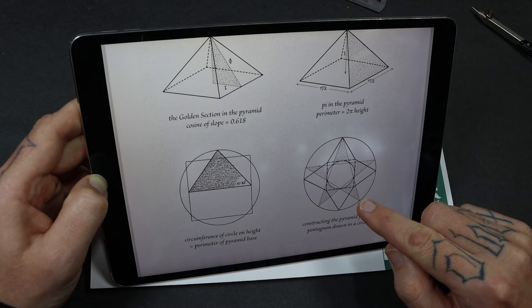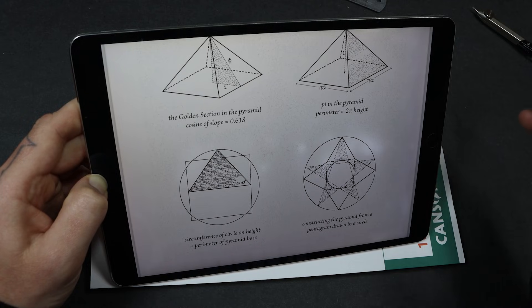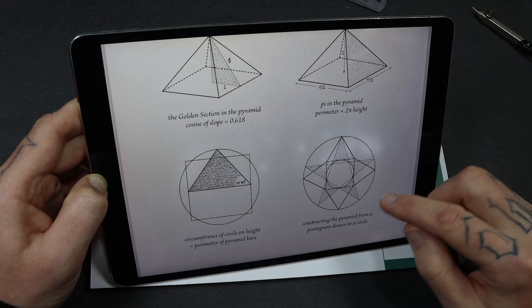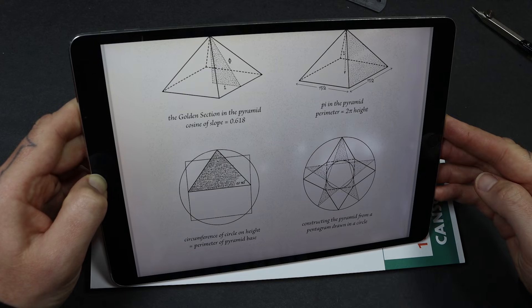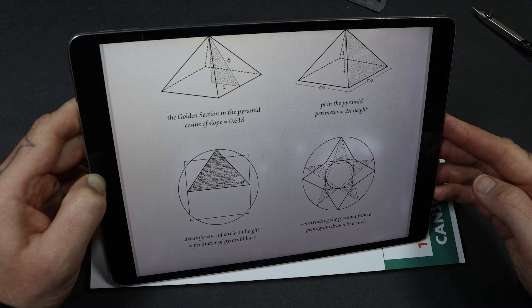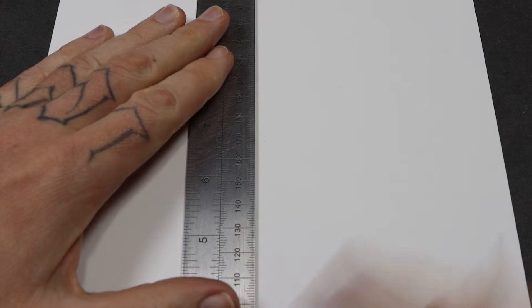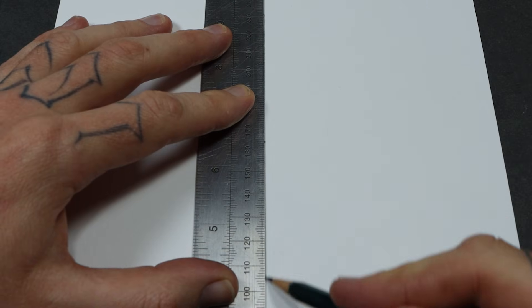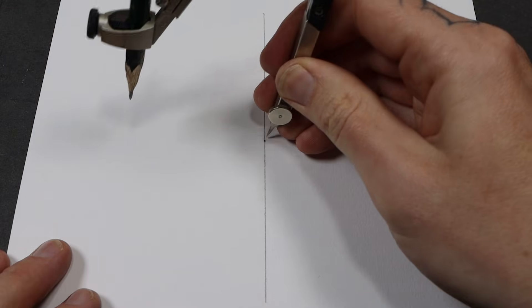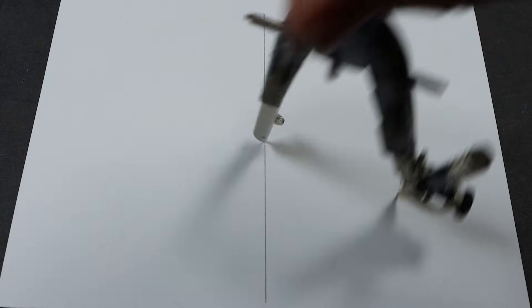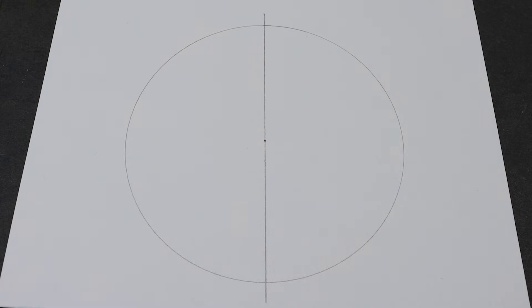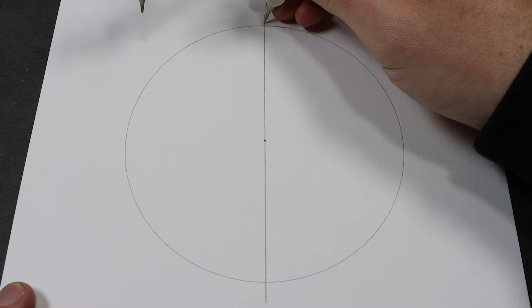But anyway, this one, this one interests me. I think that's pretty cool. Is it true? I have no idea. But we're going to try and draw that one now. Constructing the pyramid from a pentagram drawn in a circle. Let's do it. Alright, so we need to start off with a line down the middle. And then we'll draw a circle. And I need to divide this circle up into five, don't I, for the star. So we're going to need the horizontal line.